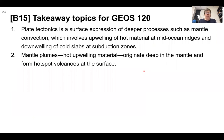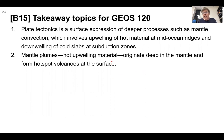Takeaway topics: Plate tectonics is a surface expression of deeper processes such as mantle convection, which involves upwelling of hot material at mid-ocean ridges and downwelling of cold slabs at subduction zones. Mantle plumes — hot upwelling material — originate deep in the mantle and form hot spot volcanoes at the surface.